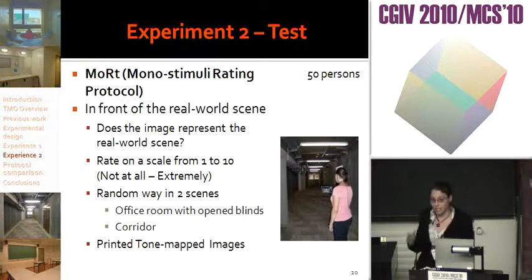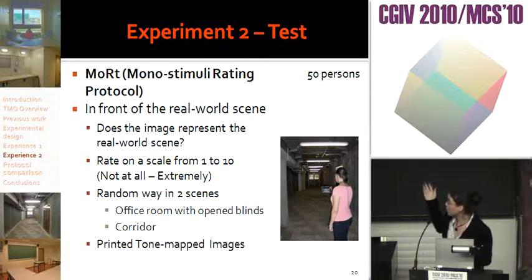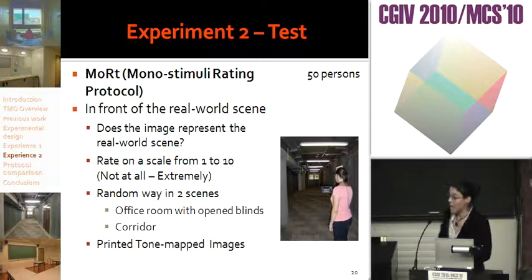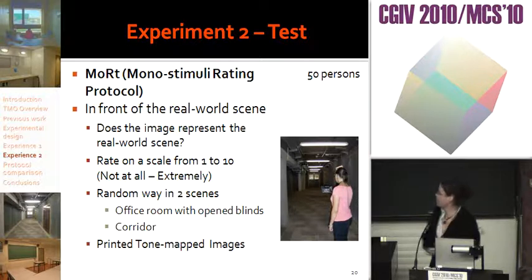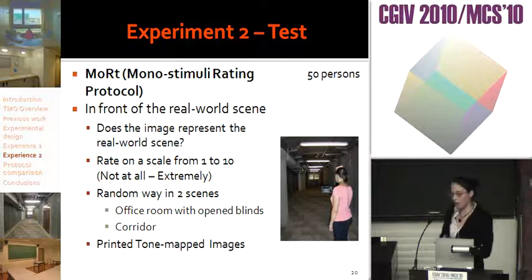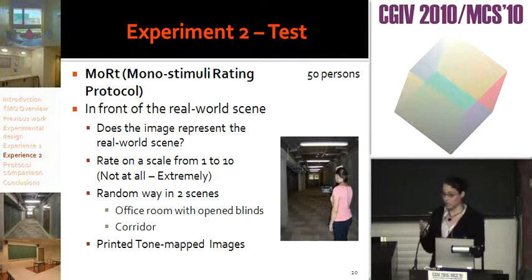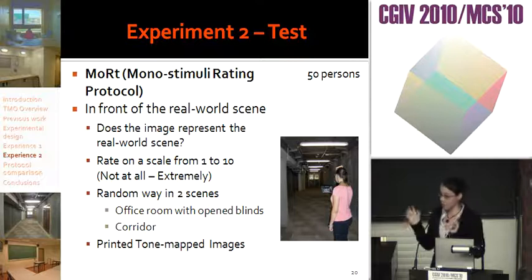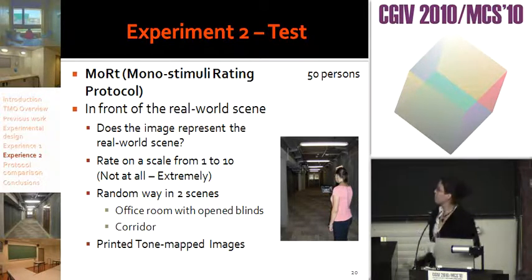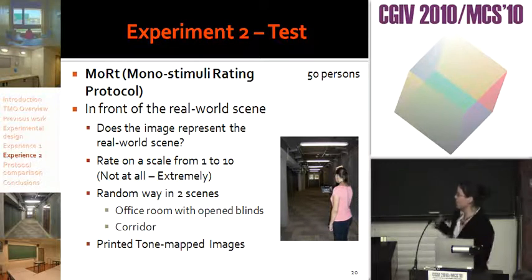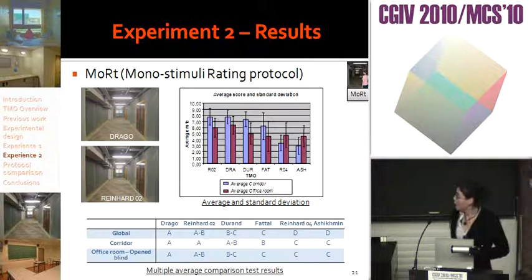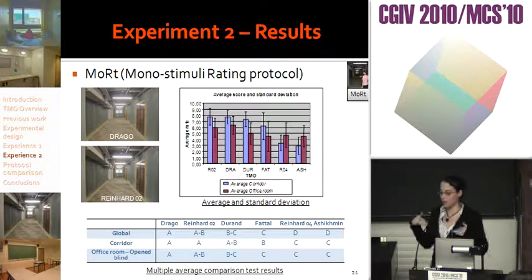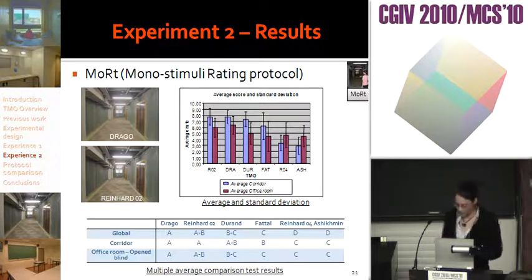Now I will explain in detail the second experiment. During the second experiment, 50% of participants took part and 42% had already participated in the first. This time, they were also in front of the real-world scene, judging each image one after another on a discrete scale from one to ten, answering the same question: does the image represent the real-world scene? The results are close — we employed the same statistical analysis, and Drago and Reinhard 2 are in the best group A.